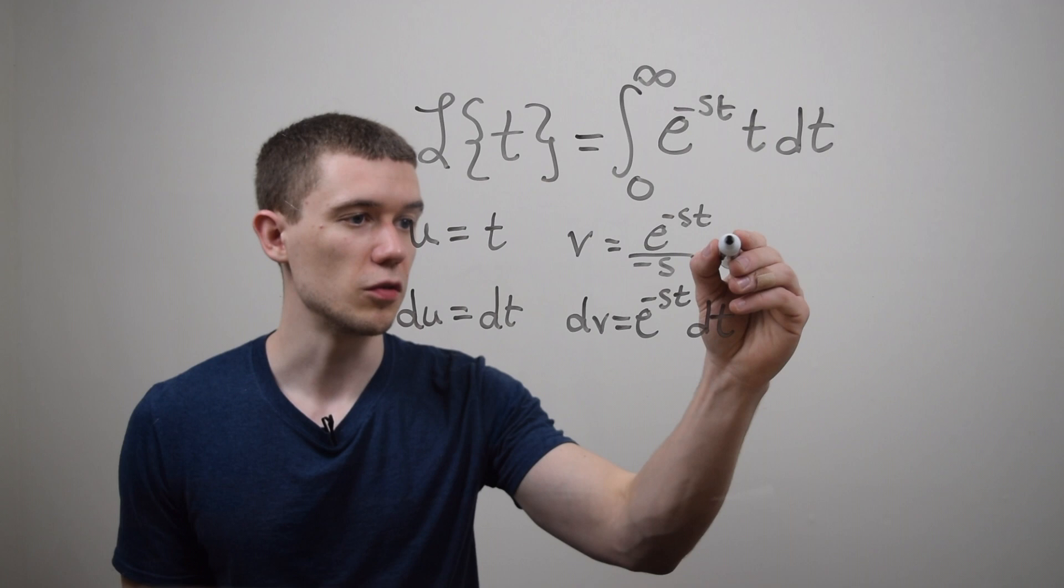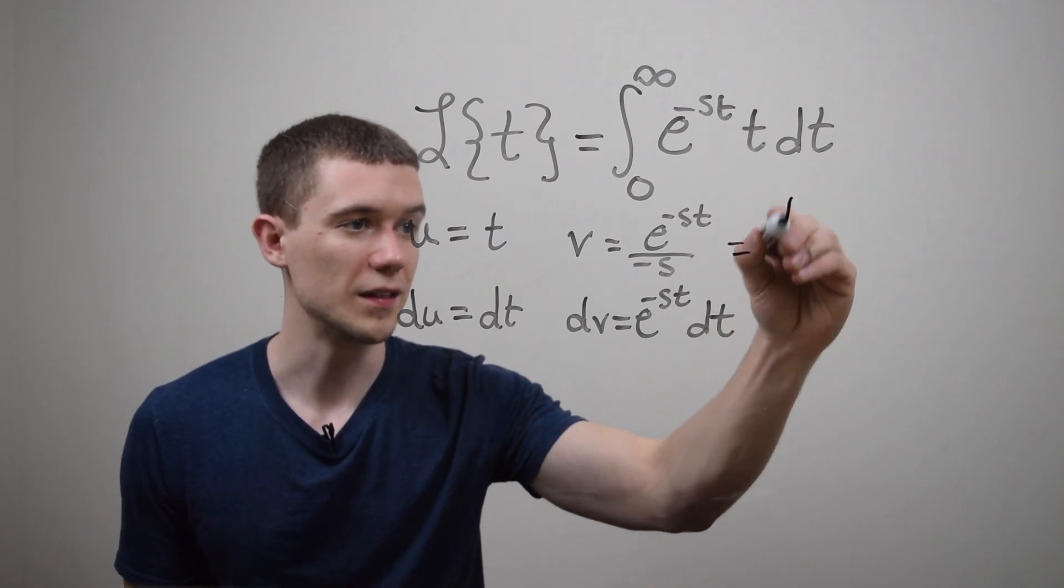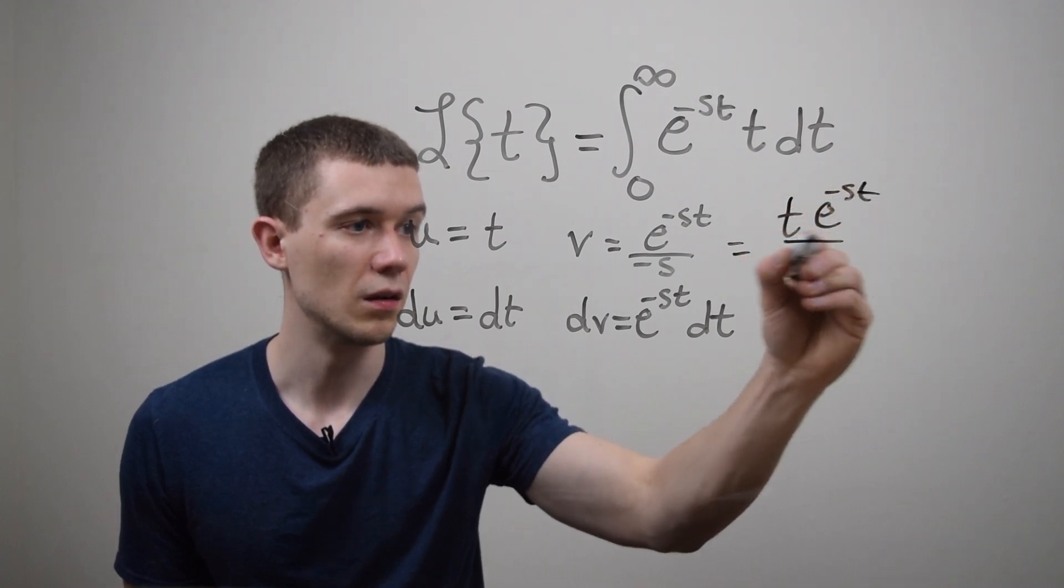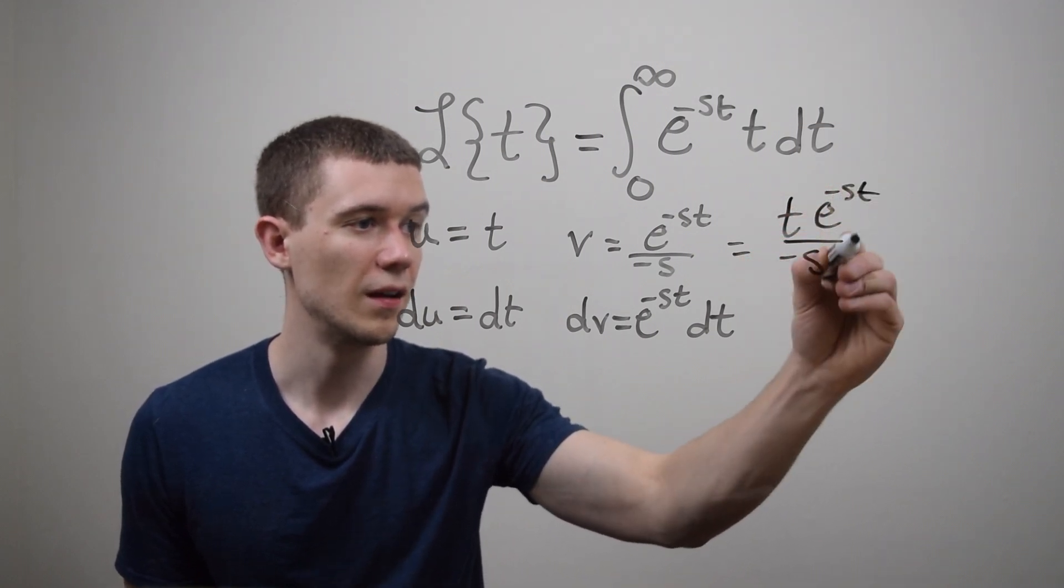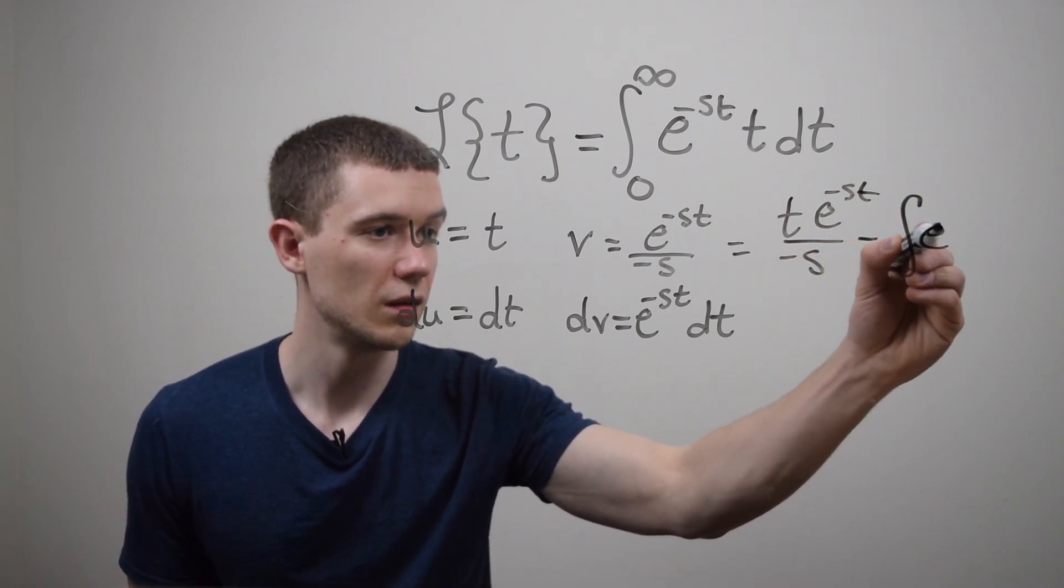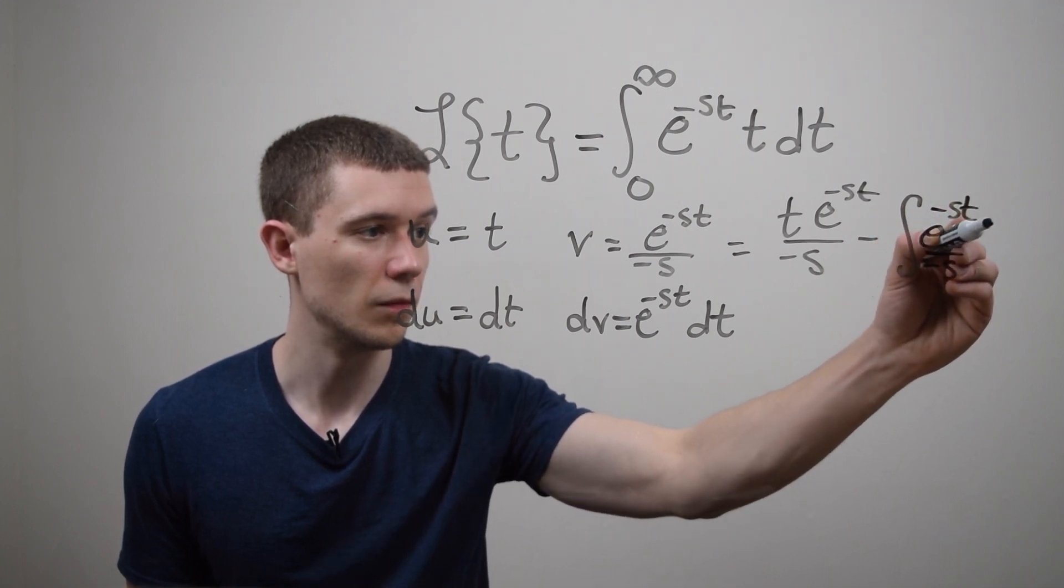So let's apply the integration by parts formula which is uv so that's t e to the minus st over minus s minus the integral of v du which is dt.